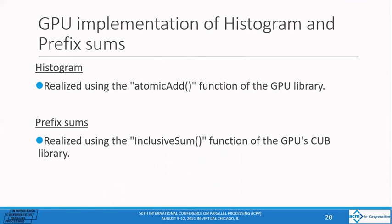The GPU implementation of histogram and prefix sums is described below. Histogram is implemented using CUDA atomic function, atomic add. And prefix sums is implemented by calling cub library function, inclusive sum.